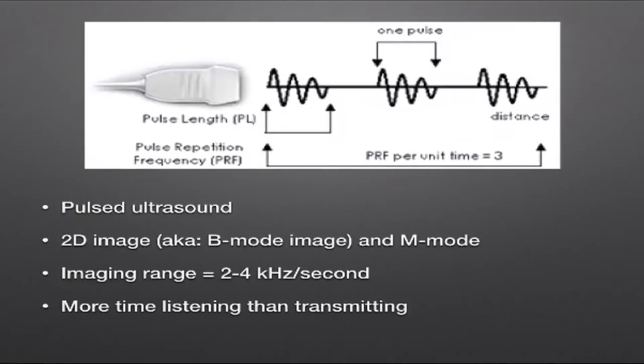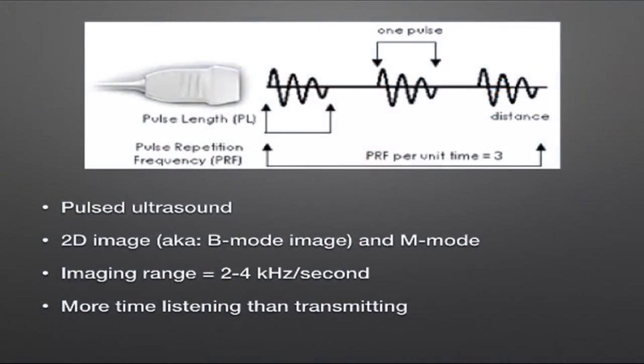Ultrasound images are made up from pulses rather than a continuous cycle. The ultrasound crystals send out one brief pulse into the body and then listen for reflections coming back. The sooner the reflection comes back, the closer that structure is to the transducer. These 2D images are also known as B-mode images, and there's another type called M-mode or motion mode. We send out around 2,000 to 4,000 pulses per second.